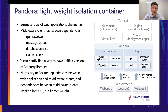We tried using OSGi but found it too complicated for developers. So we built Pandora, a very lightweight isolation container. Pandora runs inside Tomcat and has its own core implementation with a plugin system — every middleware client can be written as a Pandora plugin. Each plugin has its own class loader, so they can have their own independent dependencies.